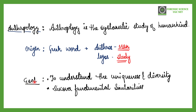The subject of anthropology has two important goals. First, to understand the uniqueness and diversity of humankind — how different people are from each other. Second, to discover fundamental similarities among humans. These two goals — understanding diversity and similarities — are the core goals of anthropology.